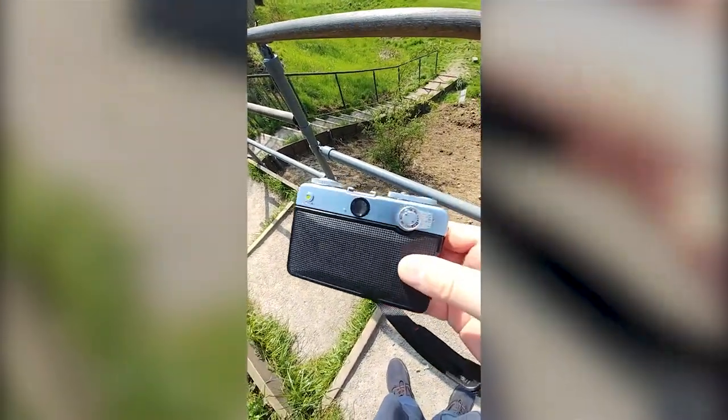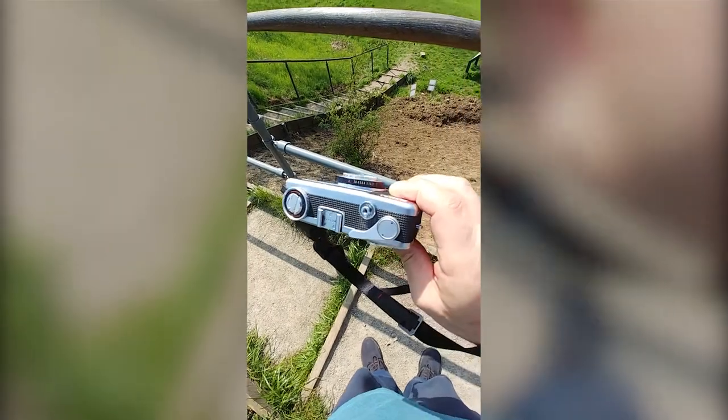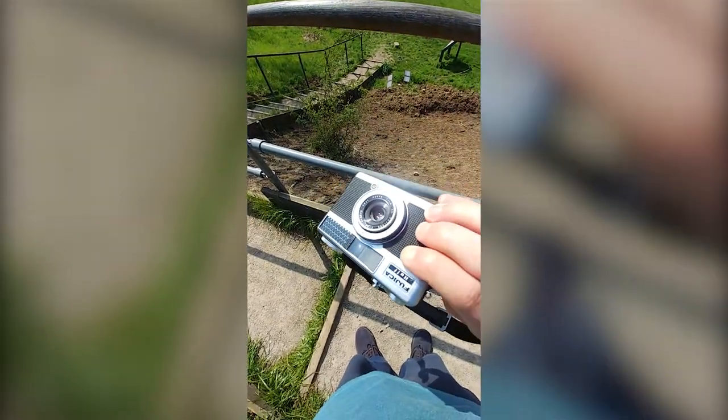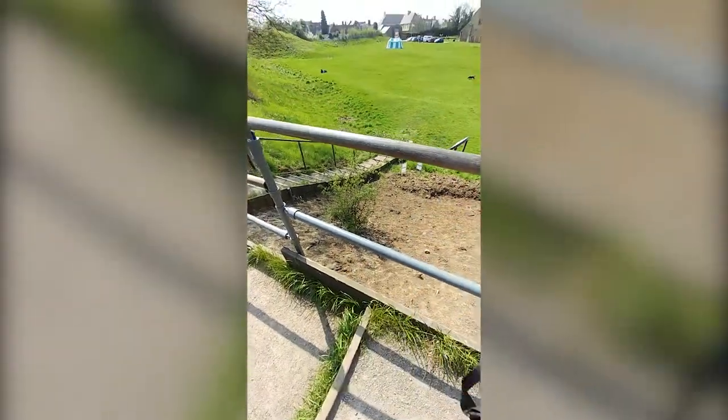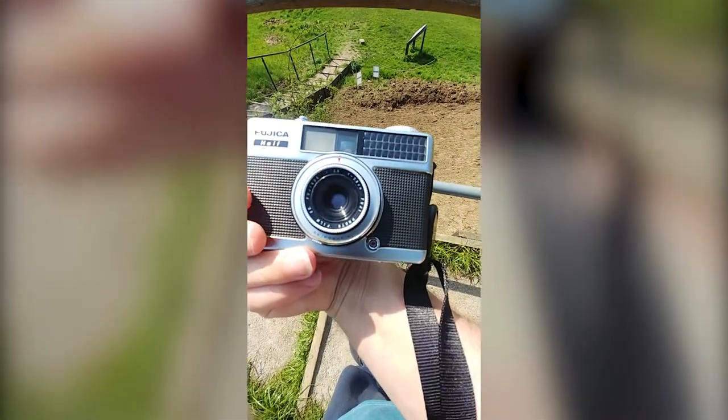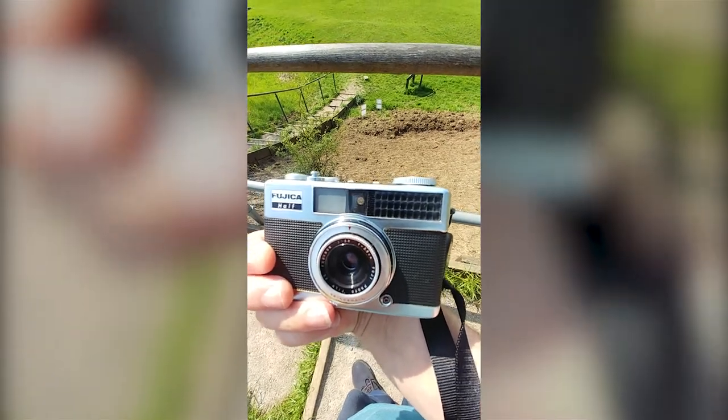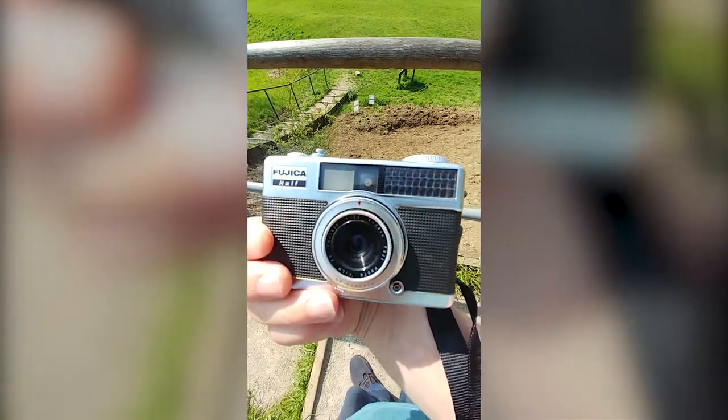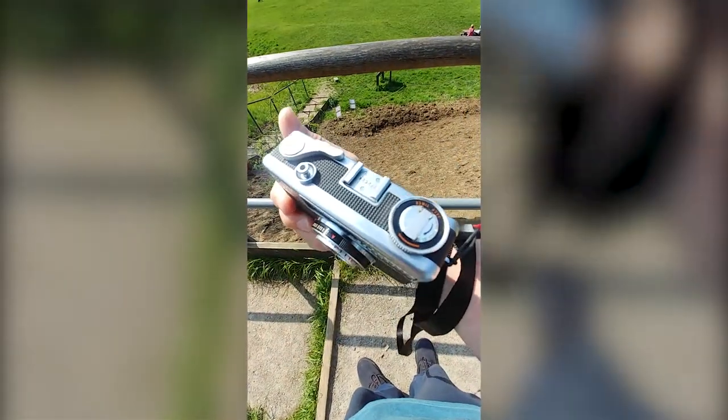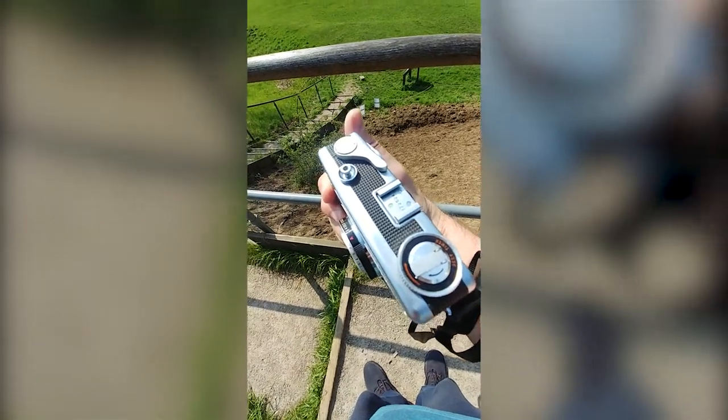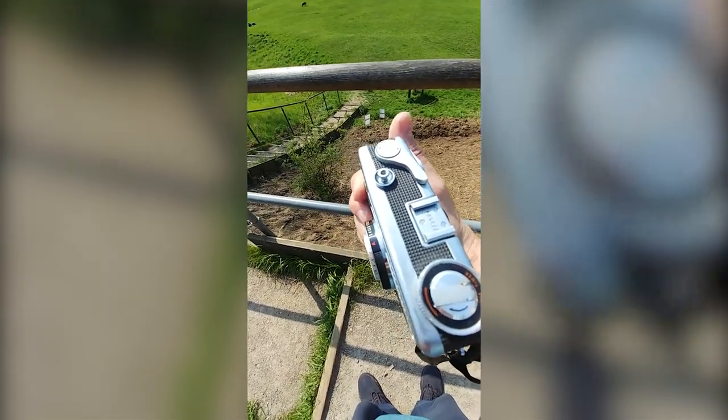The Yashica is a half frame 35mm camera with a 28mm lens on it. Selenium cell - it seems to be working, but I've not developed the film yet, so we'll give it a go after a few shots.